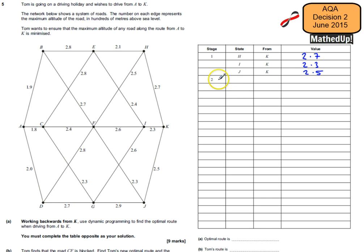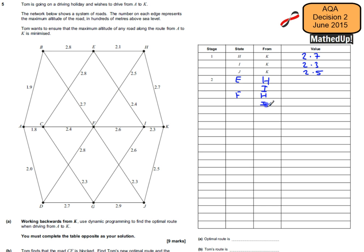Stage 2 nodes are E, F, and G. Node E has two possible actions: I can either go to H or to I. Node F has three actions: I can either go to H, I, or J. And from G, I have two possible actions: I can either go to I or to J.